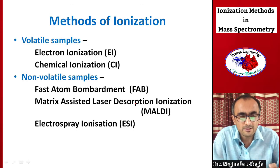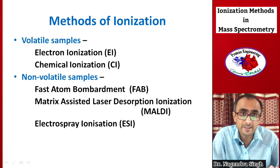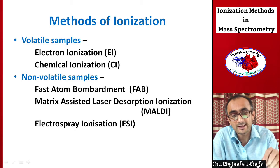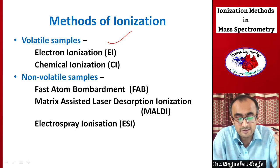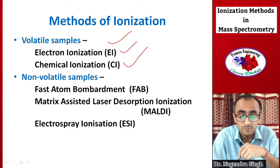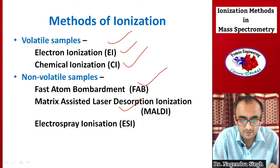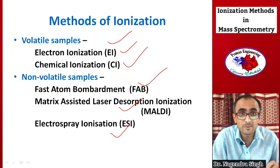The particular ionization method to be used depends on the nature of the analyte and what type of mass spectrometer is available. For example, if the analyte sample is volatile in nature, electron ionization or chemical ionization can be used. If the sample is non-volatile, then fast atom bombardment, matrix-assisted laser desorption ionization (MALDI), or electrospray ionization can be employed.